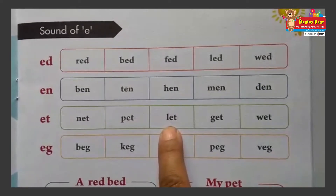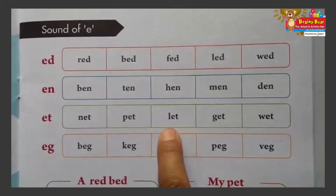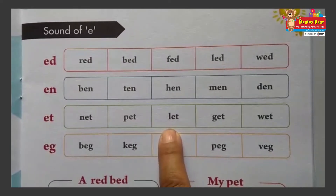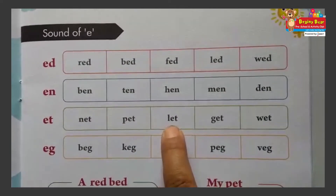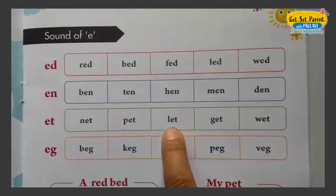Next: L, E, T. Phonic of L: L. Phonic of E: E. Phonic of T: T. L-E-T.